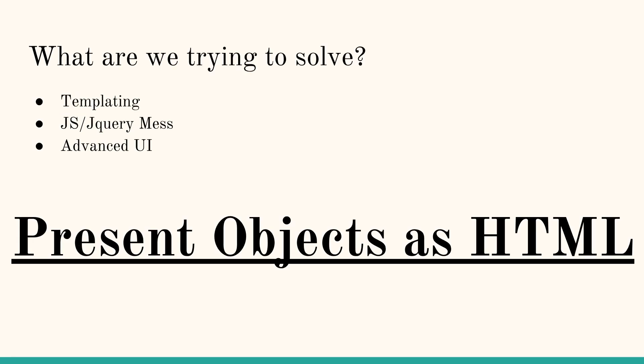What problem are we really trying to solve? If you've ever tried to manipulate the DOM — or rather HTML — using vanilla JavaScript, or if you've been using jQuery to manipulate the DOM, you know it can get quite messy and templating HTML can be a problem. So this is what we're really trying to solve: templating HTML, removing the mess, and this allows us to create more advanced UIs because of how seamlessly we can manipulate it.